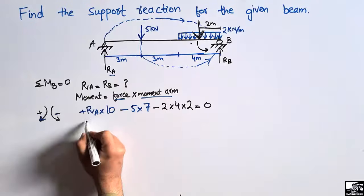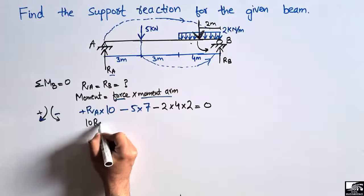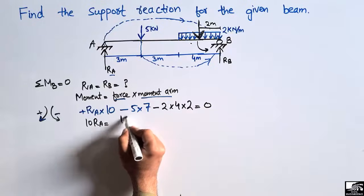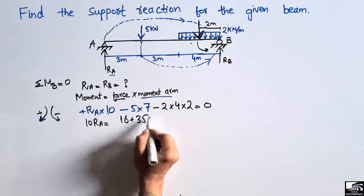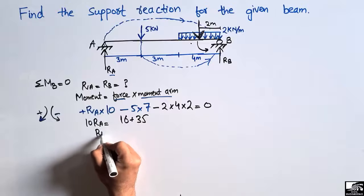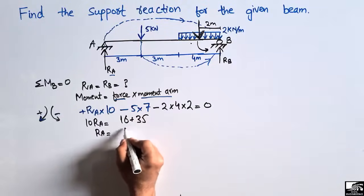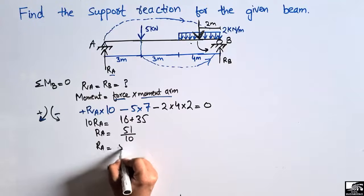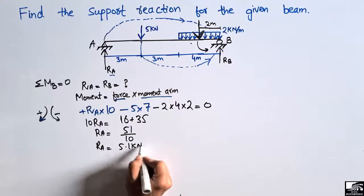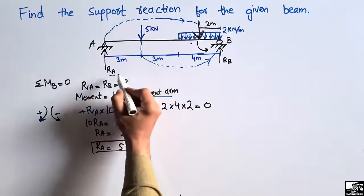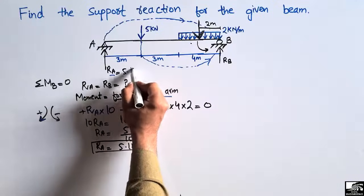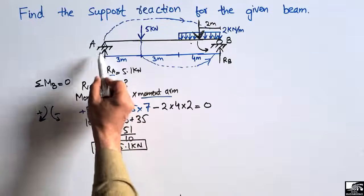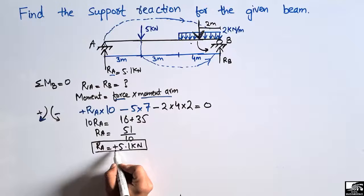Setting the summation of all moments about point B equal to zero: RA × 10 − 5 × 7 − 2 × 4 × 2 = 0, which gives 10·RA = 35 + 16 = 51. Therefore, RA = 51 ÷ 10 = 5.1 kilonewtons. The positive result confirms that RA acts in the assumed upward direction.